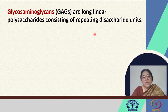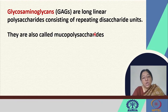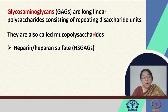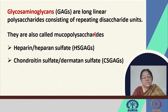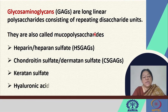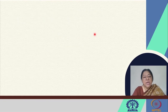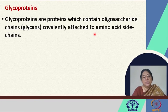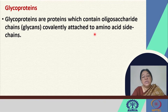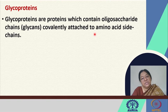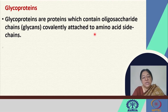The glycosaminoglycans, or GAGs, are long linear polysaccharides that consist of repeating disaccharide units. They are also called mucopolysaccharides, and important examples include heparin sulfate, chondroitin sulfate, keratan sulfate, and hyaluronic acid. Glycoproteins are proteins that contain the oligosaccharide—the glycan—covalently attached to the amino acid side chains. There is no non-covalent interaction in these specific examples of protein-carbohydrate interactions.